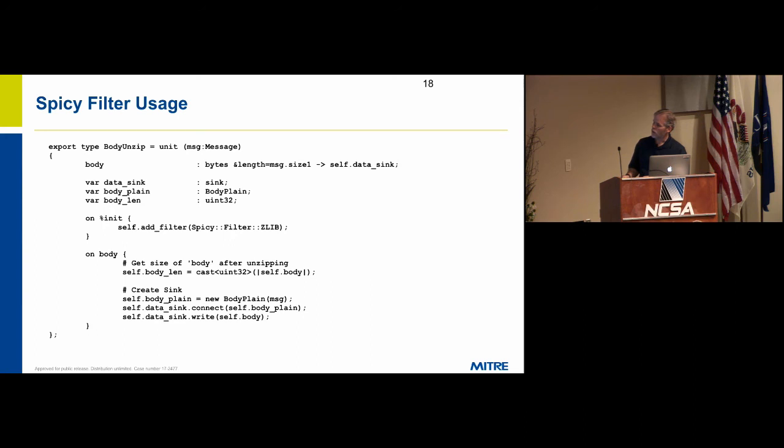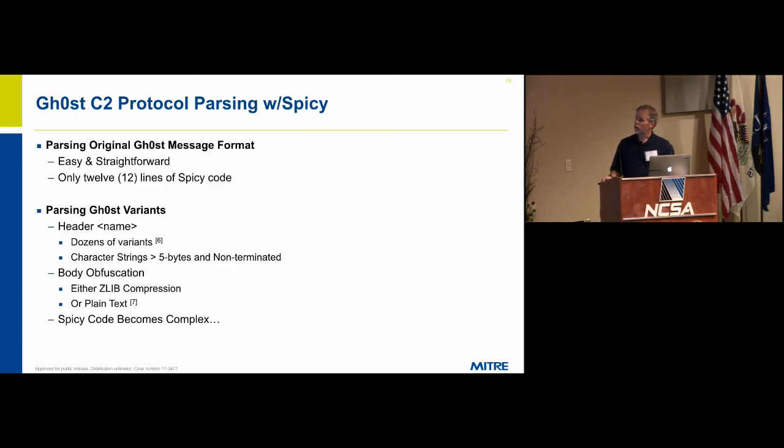The body plane, which is simply the bits and bytes of the body, can be delivered to a bro event just like the Turkojan cases. The underlying parsing of that was fairly straightforward. The original version was only 12 lines of spicy code. But as I said, there are a number of issues.